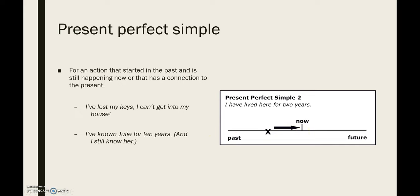Dus waarvoor gebruiken we de present perfect simple? Voor een actie die begon in het verleden en nu nog steeds invloed heeft. Twee voorbeelden: ik ben mijn sleutels verloren en ik ben die nog steeds kwijt — dat wil zeggen, ik kan mijn huis niet in. Of: ik ken Julie al 10 jaar en ik ken haar nog steeds vandaag. Die tijden verwijzen naar het feit dat zaken hier begonnen en dat die vandaag nog steeds invloed hebben. Mocht het zo zijn dat je Julie al 10 jaar niet meer gesproken hebt, dan zou er een andere tijd gebruikt worden — dat zien we zo meteen.